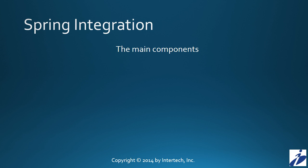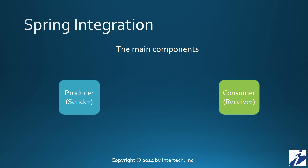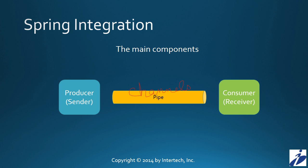In a spring integration system, or for that matter, in any enterprise application integration system, there are three different types of components. We have producers, otherwise known as senders, and consumers, otherwise known as receivers. These two high-level components need to communicate with each other, and they do so through a pipe. In spring integration, the pipes are called channels, and the producers and the consumers are known as endpoints.